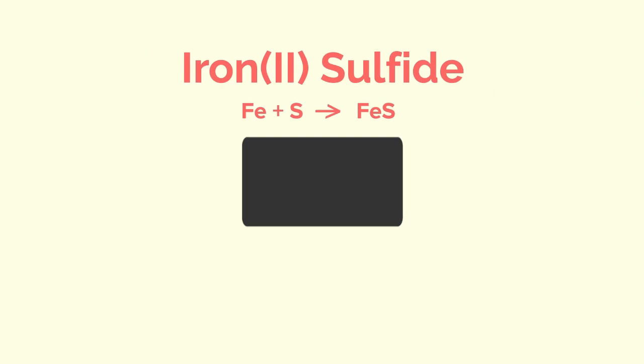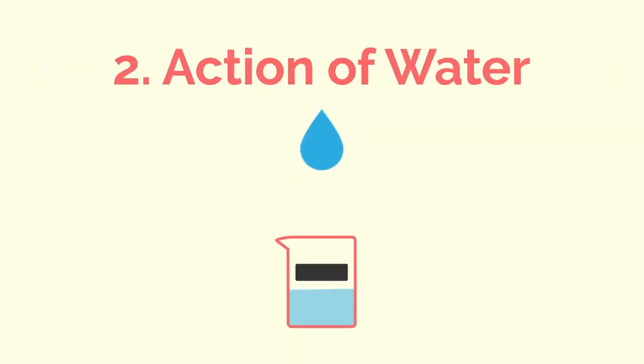Now let us look at how the compound iron 2 sulfide behaves in the four tests. It's a black solid, different appearance to either the iron or the sulfur. It all sinks, there is no separation.